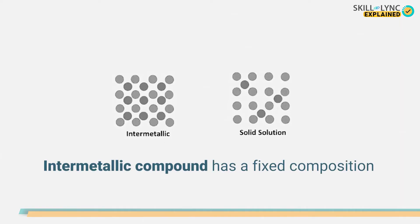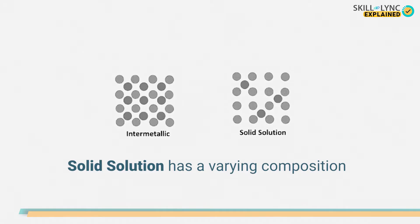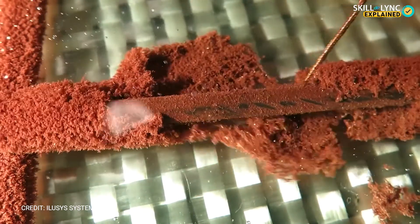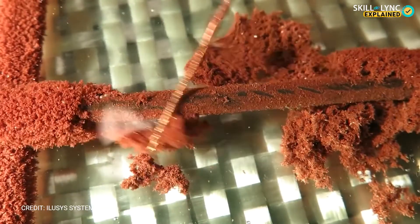Another major difference between these two is that the composition of the intermetallic compound is fixed, whereas the composition of the constituents in a solid solution may vary. For example, a copper and nickel solid solution may contain different combinations of copper and nickel.